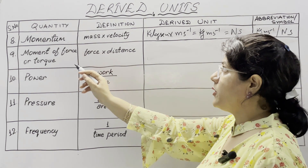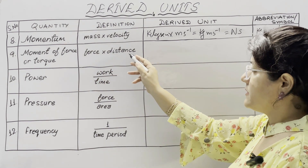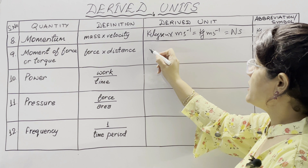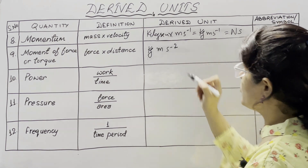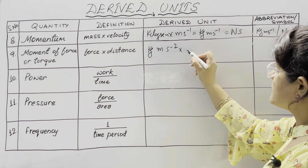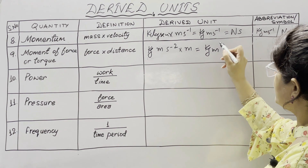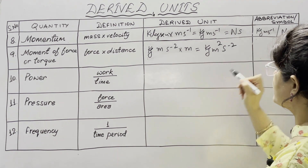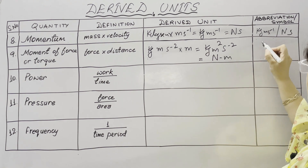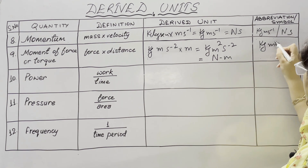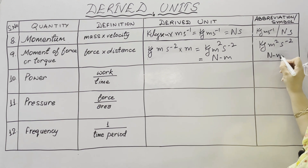Next is moment of force or torque. Its definition is the product of force and distance. The unit of force is kg m s⁻² and multiplying by distance gives meter, so the unit is kg meter square per second square. You can also write it as newton meter.